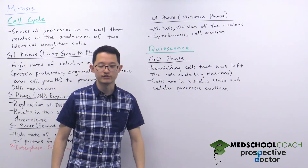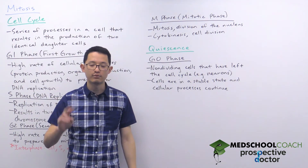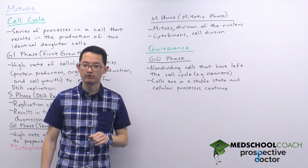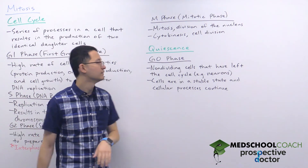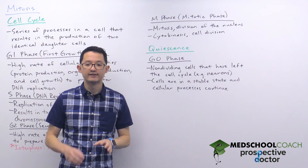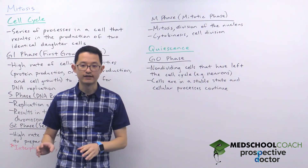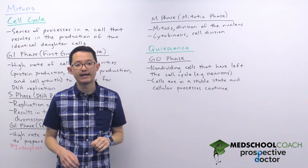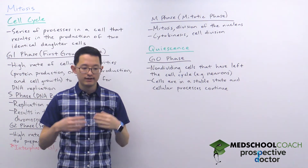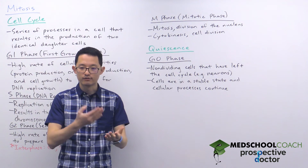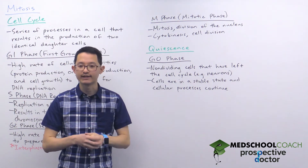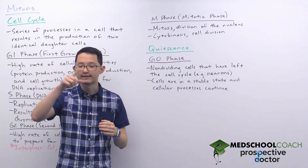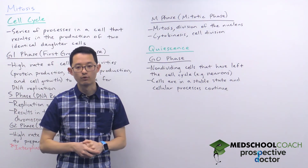Last we have the M phase, which is also called the mitotic phase. There are two processes that occur here: mitosis, which involves the division of the nucleus into two identical nuclei, and cytokinesis, which is the division of the cell into two identical daughter cells. Combined, mitosis and cytokinesis make up the M phase. Since this is a cycle, cells start with the G1 phase, go through the S phase, G2 phase, and then the M phase, producing two identical daughter cells that are now in the G1 phase and can repeat the cycle to produce more cells.